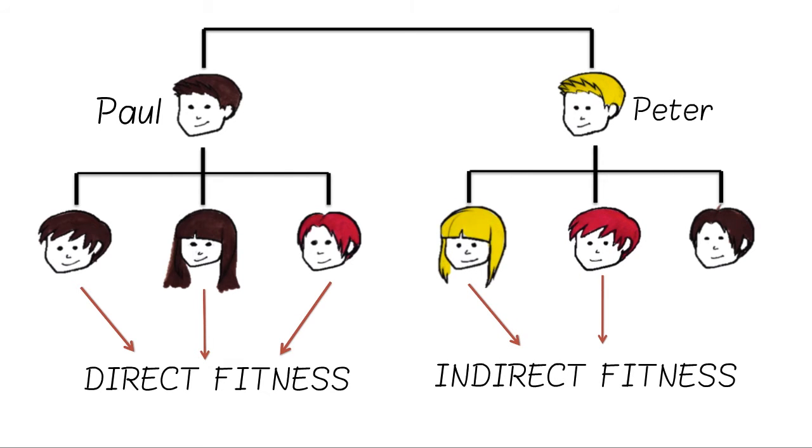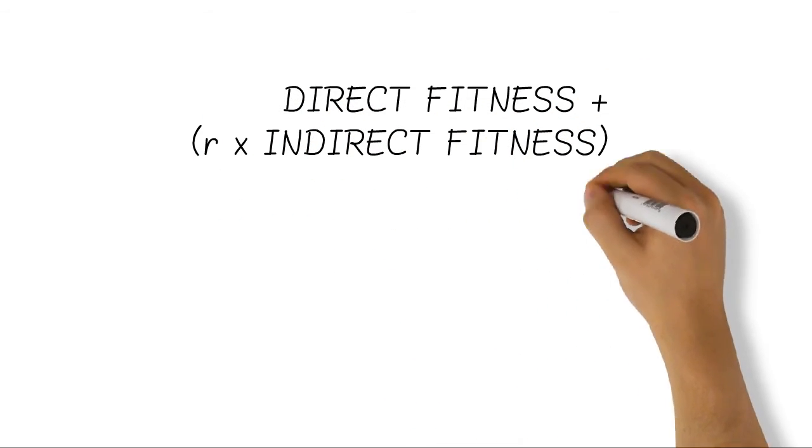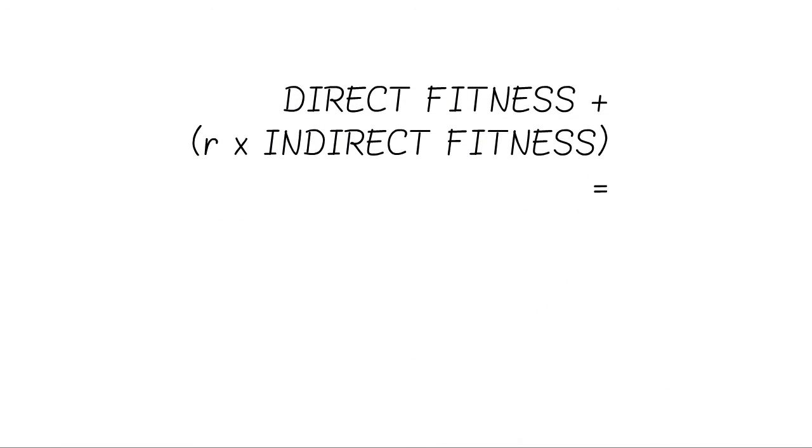It is important to remember here though, that Paul's indirect fitness does not include all of Peter's offspring, only those that he helps. Paul's direct fitness, combined with his indirect fitness, multiplied by the relatedness value, pooled together to make his inclusive fitness.